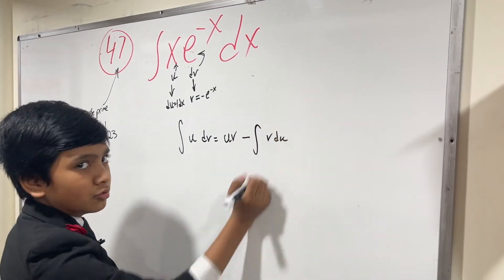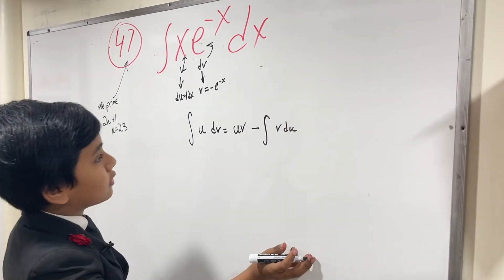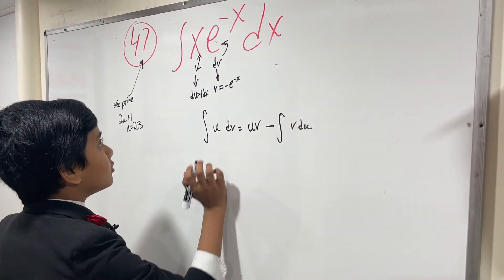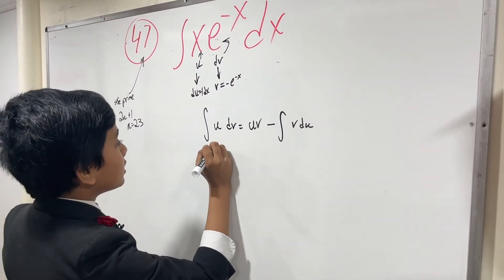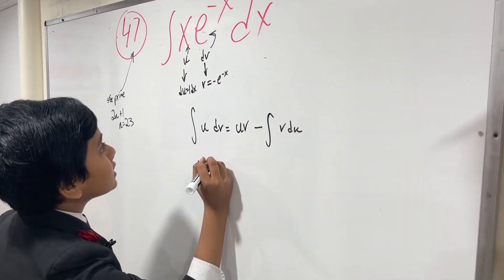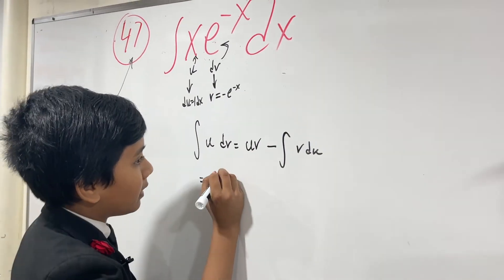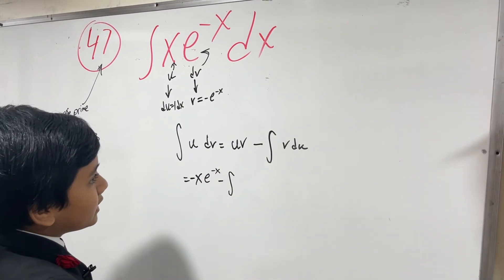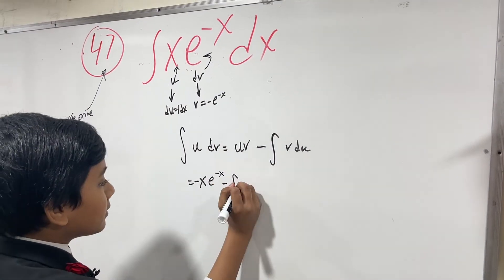So the integral of u dv, which is what we're solving for, equals u times v, which is x times (-e^(-x)), minus the integral of v du, which is (-e^(-x)) times dx.